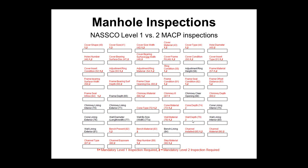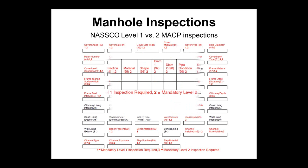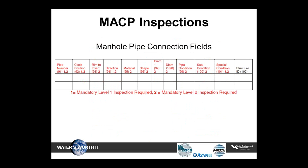What you see now is the summary sheet of all the Level 1 and Level 2 MACP inspection fields with the basic information. You can see levels one and two in red, indicating which ones are mandatory — whether those fields are mandatory for a Level 1 or Level 2 inspection.